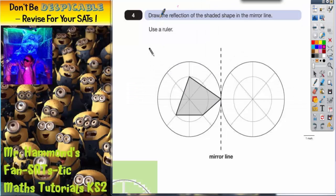Question 4: Draw the reflection of the shaded shape in the mirror line. As soon as you see the words reflection and mirror, you should be thinking about getting yourself a mirror and getting yourself some tracing paper.